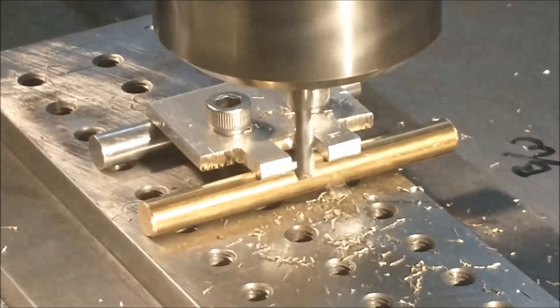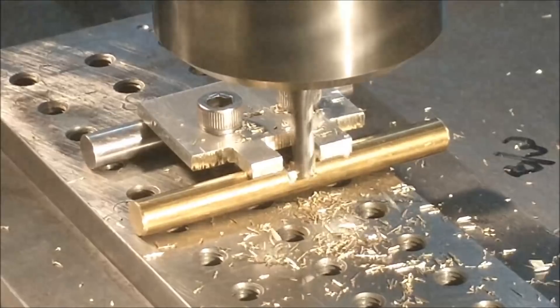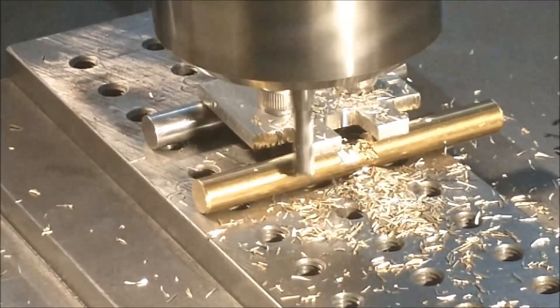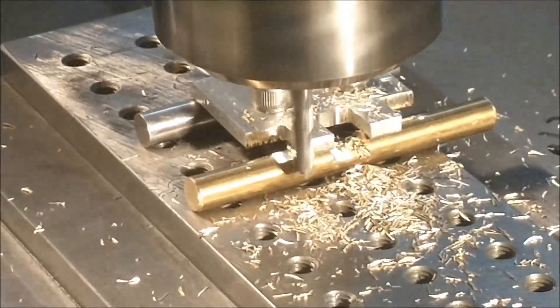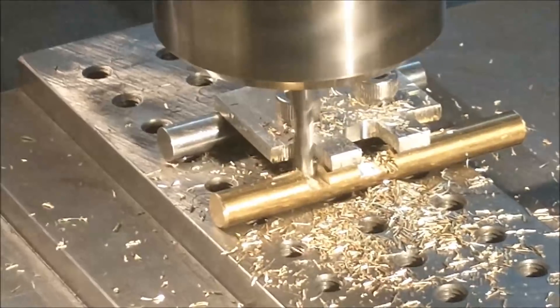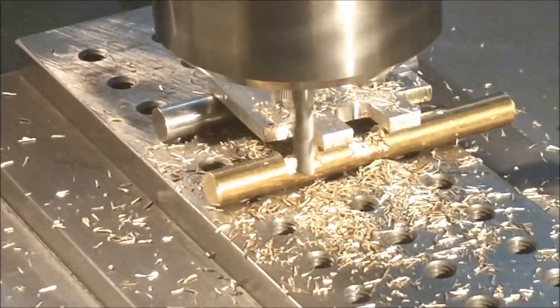I'm going to rough all three of these pockets out leaving a five thou surface on the bottom and finish all three at the same time without any table movement. And you can see if I hit the clamp right there, it's no big deal. These are aluminum clamps. Just if you hit those fingers, don't make them too thin where they flex and you lose your grip.